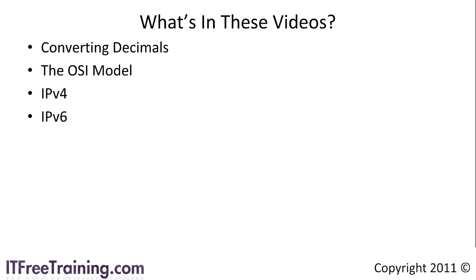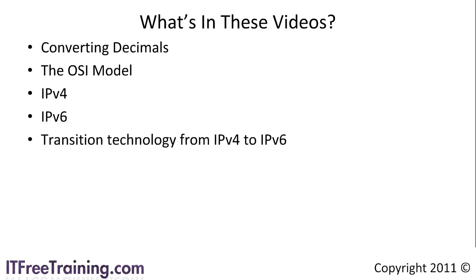Lastly I will look at transition technologies — technologies designed to migrate your existing networks from IP version 4 to IP version 6. These systems will help you connect your IP version 4 networks to IP version 6, as well as allow IP version 6 networks to connect to existing IP version 4 networks.